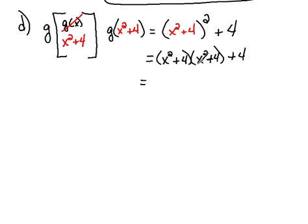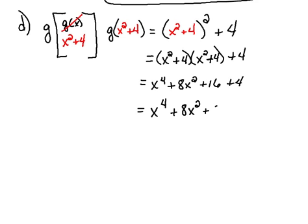So now we can distribute and simplify. So this would be X to the 4th. We have 4X squared plus 4X squared would be plus 8X squared. And then 4 times 4 would be plus 16 plus 4. So our final answer here would be X to the 4th plus 8X squared plus 20.